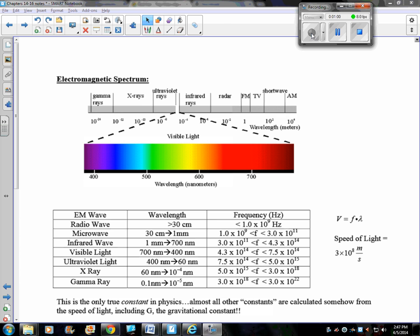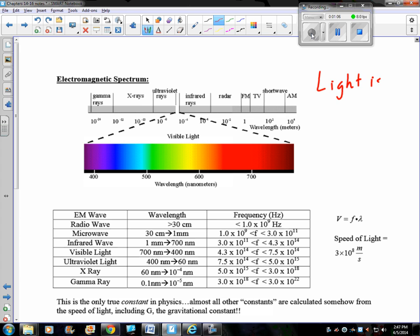The big idea to remember here is that light is a wave. Light behaves as a wave. It follows the same properties that we learned about for waves in chapters 12 and 13. Light can show examples of interference patterns. Light can constructively and destructively interfere with itself.